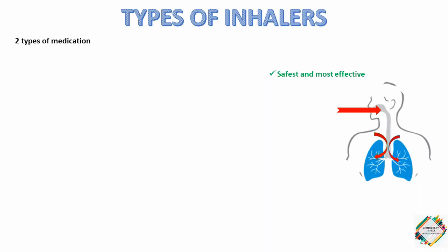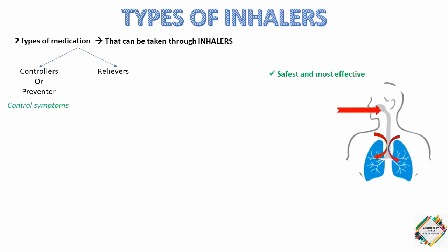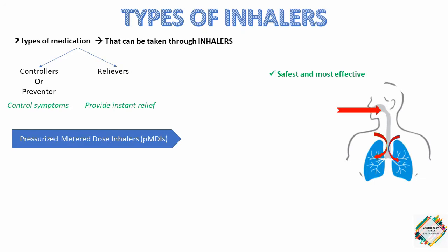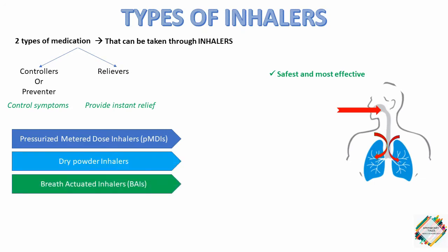There are two types of medication that can be taken through inhalers: controllers or preventers, and relievers. As the name suggests, controllers or preventers are used to control symptoms, and relievers are used to provide instant relief. Inhaler devices are broadly classified into four categories: pressurized metered dose inhalers, dry powder inhalers, breath actuated inhalers, and nebulizers.